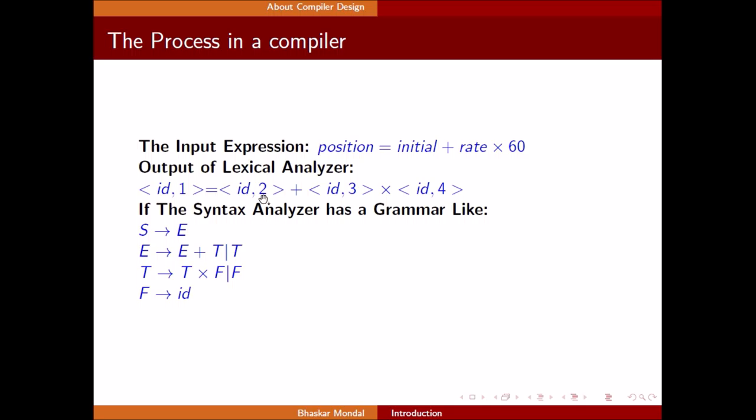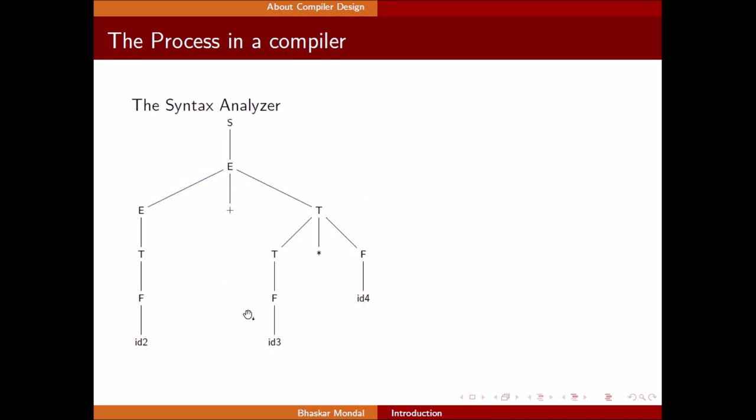This is the second identifier we found in the code, so ID2. This is the third one, ID3, and ID4 is the number 60. This is also an identifier - constants are identifiers.